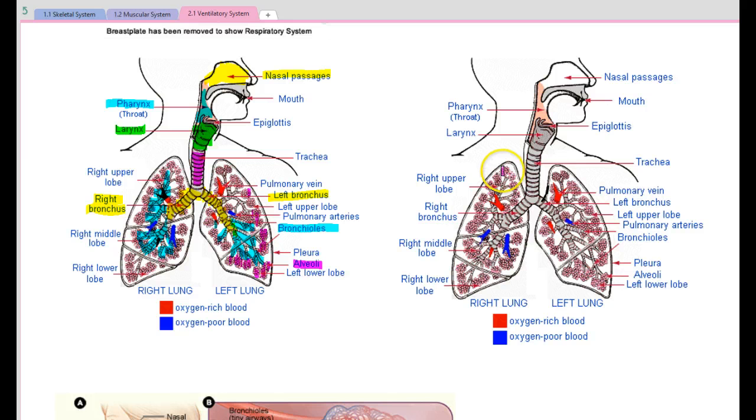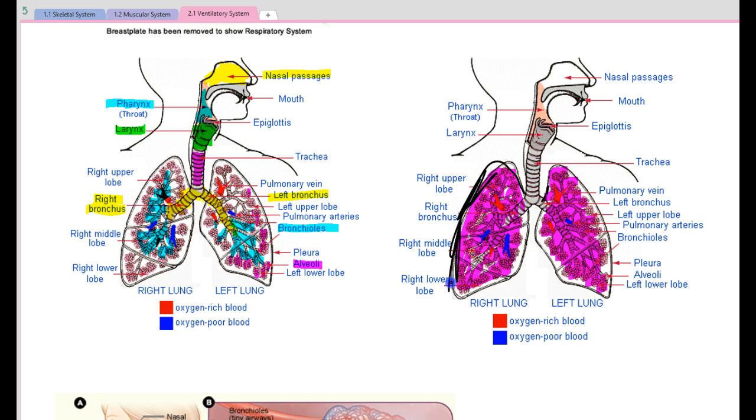Over this side, we're going to look here specifically at our right lung. We'll just give that a good color in. We have three very distinct lobes on the right side.